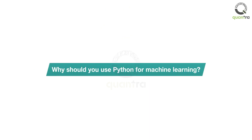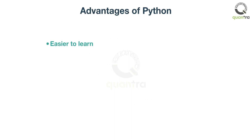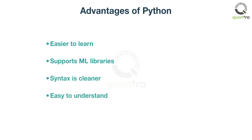Why should you use Python for machine learning? Machine learning can be implemented in any programming language. In fact, C++ is used by programmers to implement ML projects which are time-sensitive. If you are an HFT firm, you might choose C++. But an overwhelming majority use Python because it is easier to learn, it supports various ML libraries, and the syntax is cleaner and easy to understand.